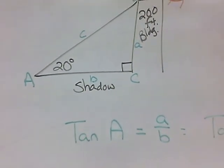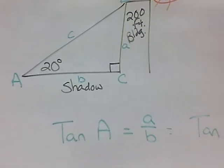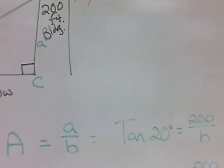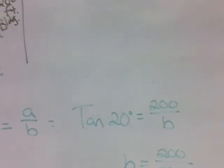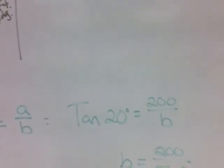So tangent of A equals A over B, and then we're going to substitute in what we're given. We have tangent of 20 degrees is equal to 200, that's our building, over B.